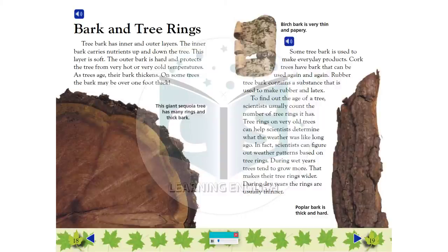Bark and Tree Rings: Tree bark has inner and outer layers. The inner bark carries nutrients up and down the tree. This layer is soft. The outer bark is hard and protects the tree from very hot or very cold temperatures.